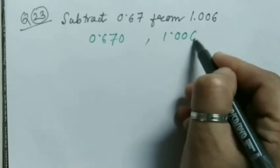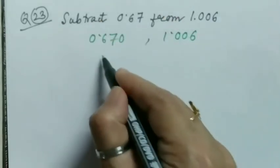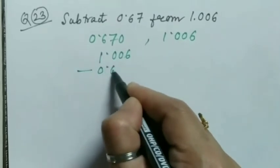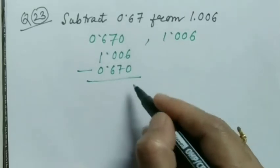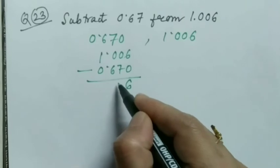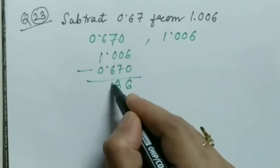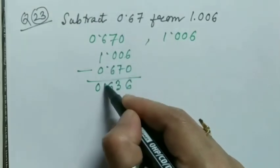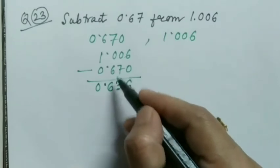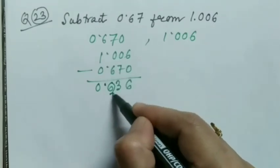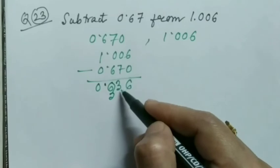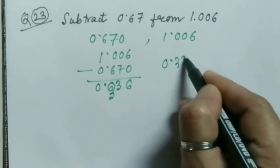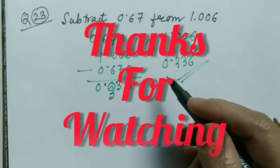Now subtracting: 1.006 minus 0.670. This one is 6, this one is 10 minus 7 is 3, 9 minus 6 is 3, and this is 0. Now I'm putting this decimal point just below this decimal point. So our final answer is 0.336.